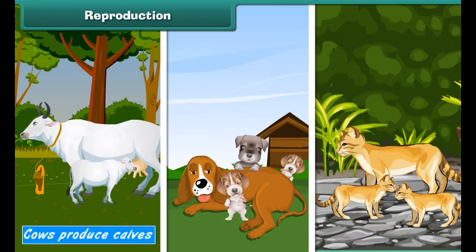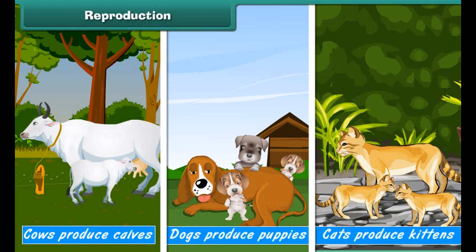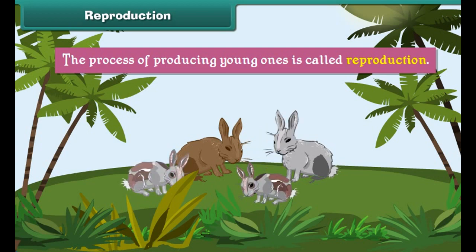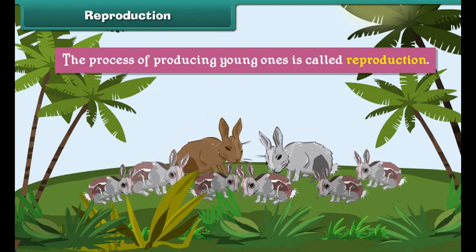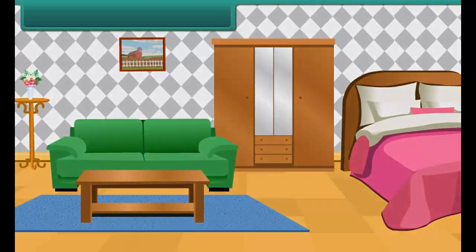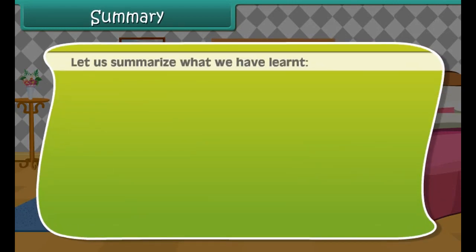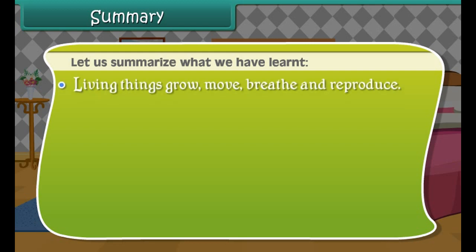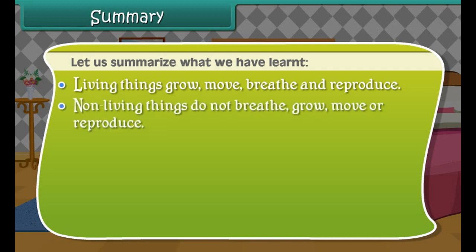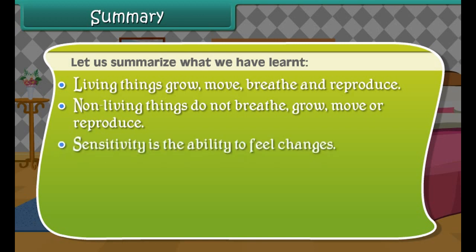Movement: all living things move. For example, birds fly, fish swim, and all land animals run. However, non-living things cannot move on their own. Reproduction: all living things produce young ones like them. For example, cows produce calves, dogs produce puppies, and cats produce kittens. The process of producing young ones is called reproduction. Non-living things do not reproduce.